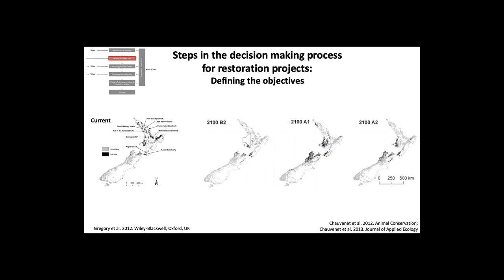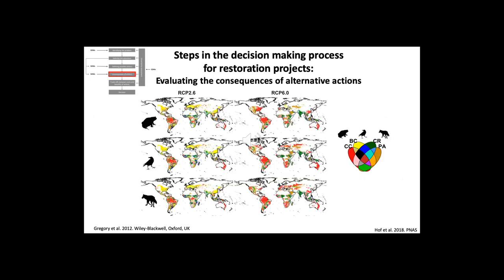The figures show climatically suitable habitat in black and climatically unsuitable in grey, with white being entirely unsuitable habitat. Evaluating the consequences of alternative actions is the fourth step, and ecological niche models can be used, for example, to predict resultant changes to species distribution or to the quality of habitat.